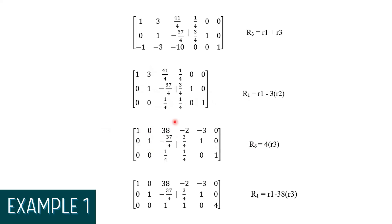After making that column entry 0, we normalize by multiplying 4 to row 3. After multiplying, we come up with the matrix: [1, 0, 38; negative 2, 3, 0; 0, 1, negative 37; 4, 3/4, 1, 0; 0, 0, 1; 1, 0, 4].